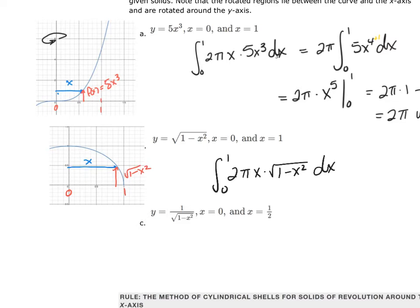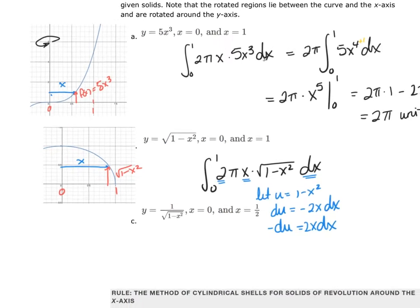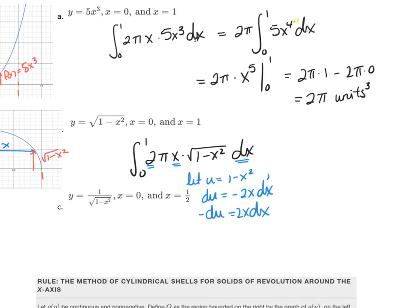For this integral, we use u-substitution because we see √(1 - x²). Let u = 1 - x², so du = -2x dx, which means -du = 2x dx. Because we've changed the variable, we need to change the limits of integration: when x = 0, u = 1.